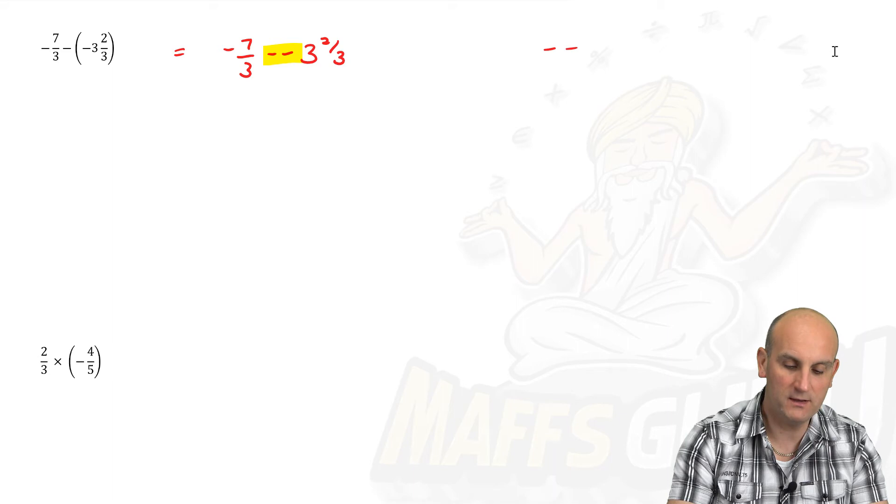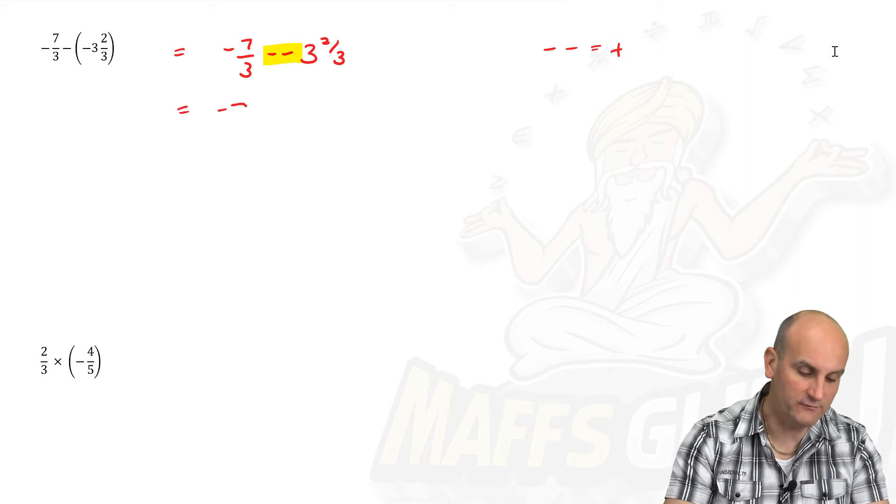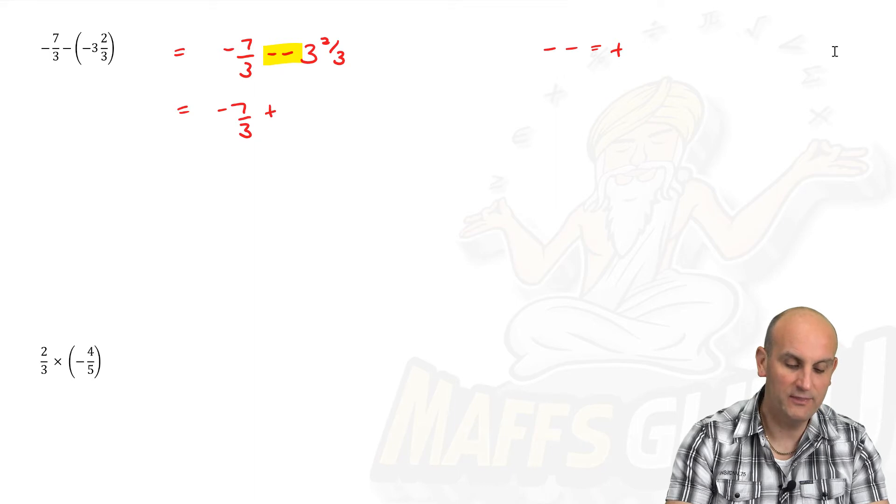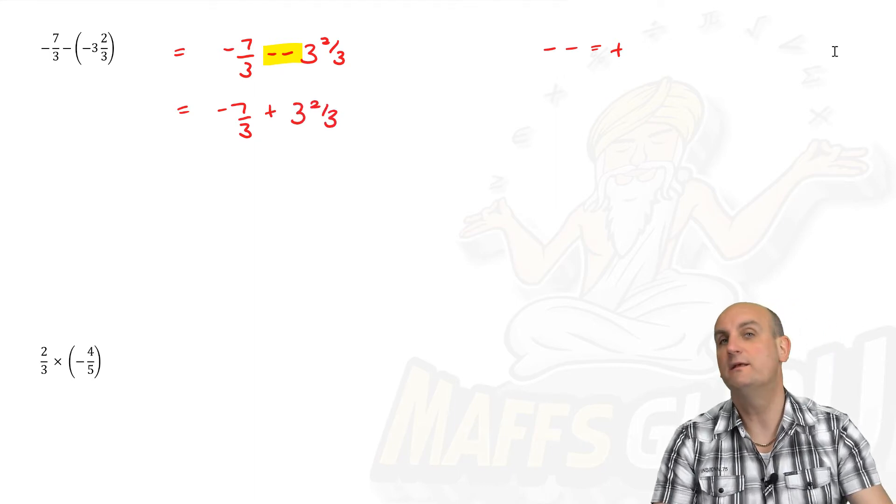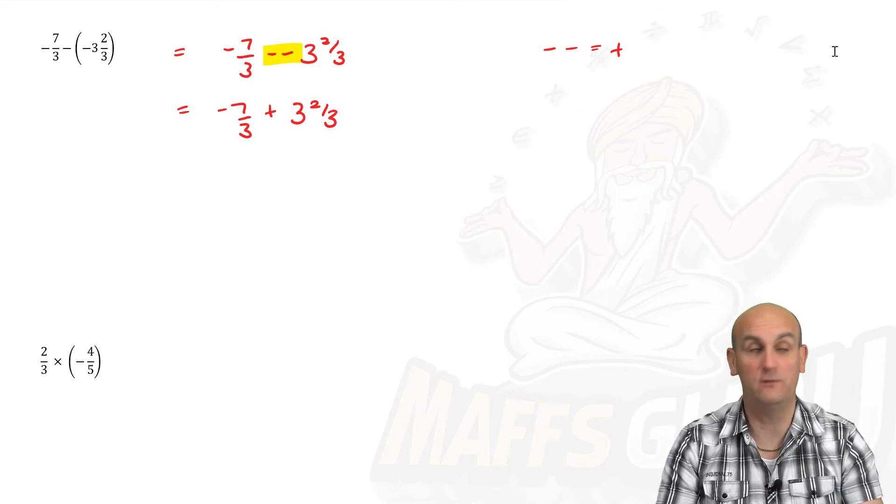Was it the same? So that minus in front of the seven thirds stays the same. That becomes a plus, and that becomes three and two thirds. There's no value in doing this in your head. You're going to make silly mistakes.